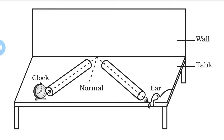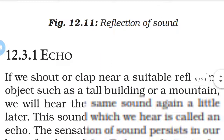The second observation: lift the pipe on the right vertically to a small height and observe what happens. When the pipe on the right is lifted vertically to a small height, the sound of the clock is not heard. The reason is that the right tube is no longer in the same plane as the incident sound and the normal.